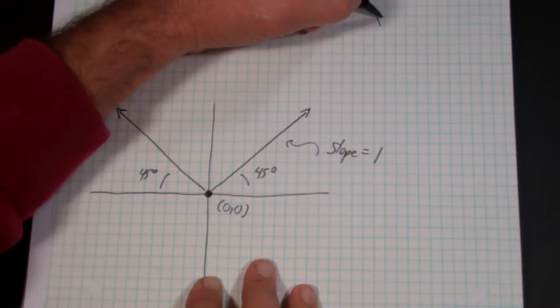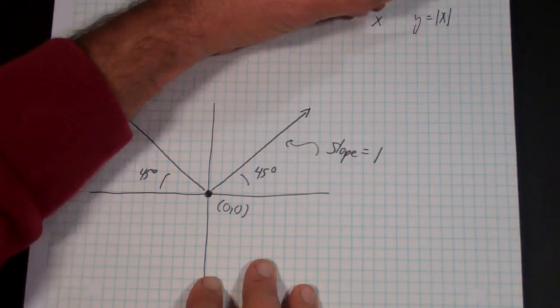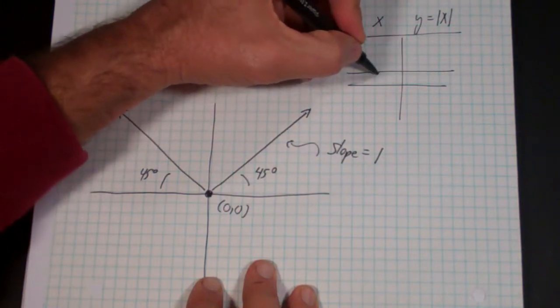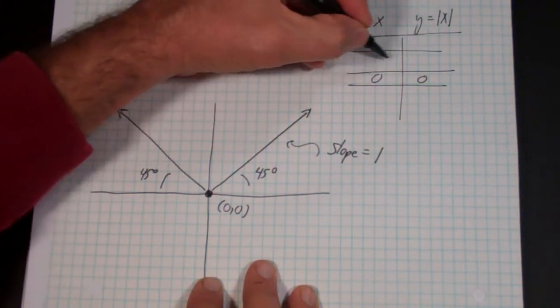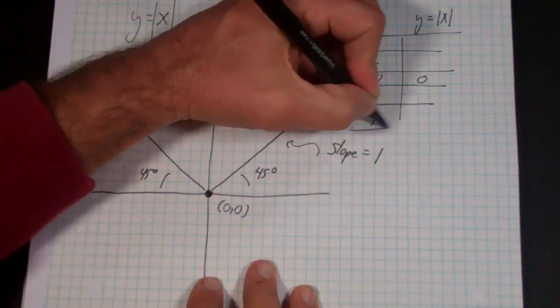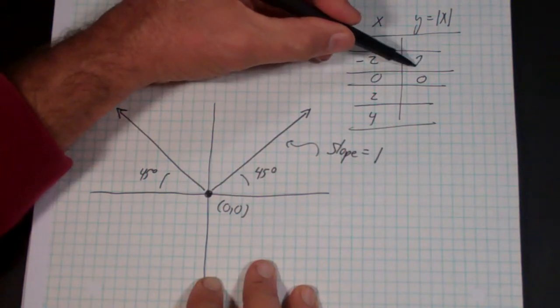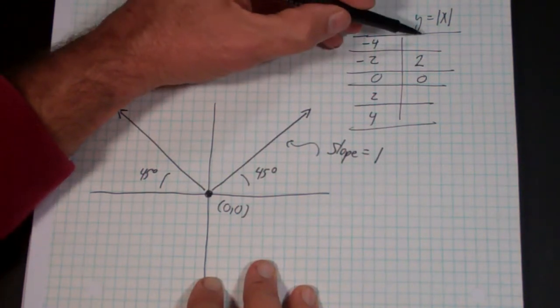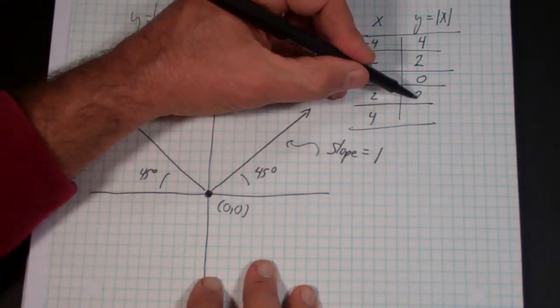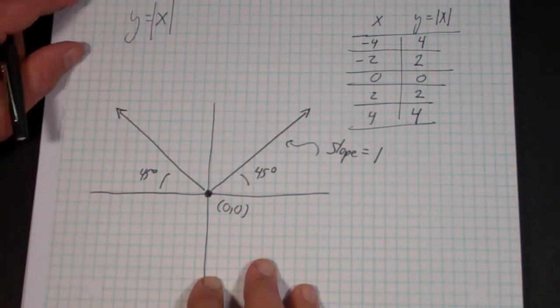And if you wanted to you could draw a little table x and y equals absolute value of x. If x is negative 2, then the absolute value will be 2. If x is minus 4, the absolute value is 4. If x is 2, the absolute value is 2. And if x is 4, the absolute value is 4. So you get a graph that looks just like this.